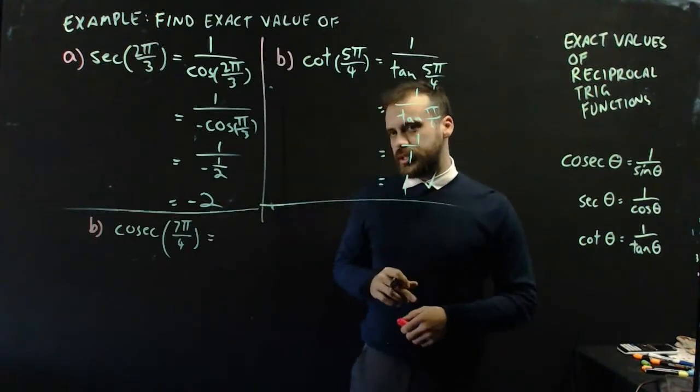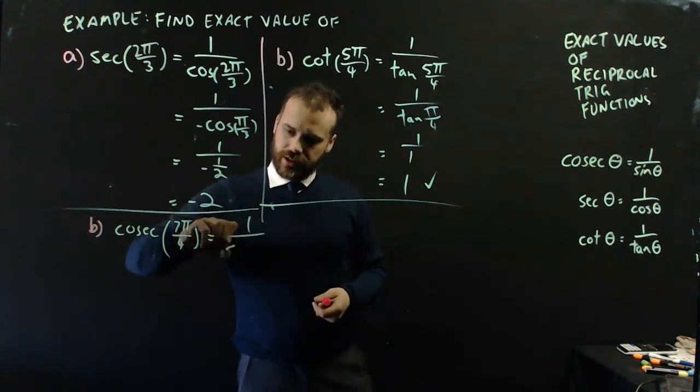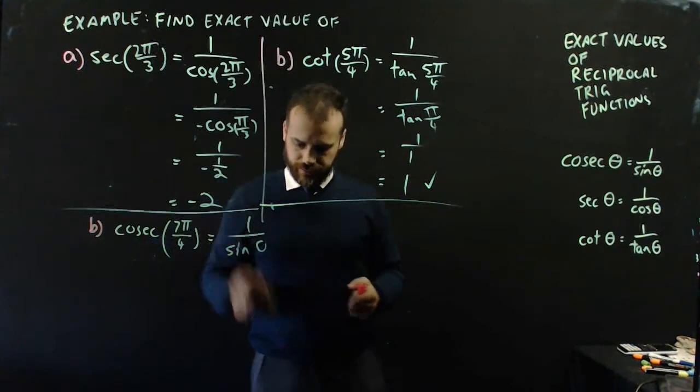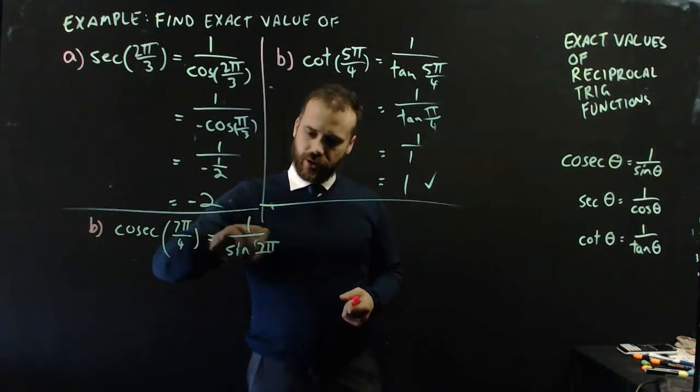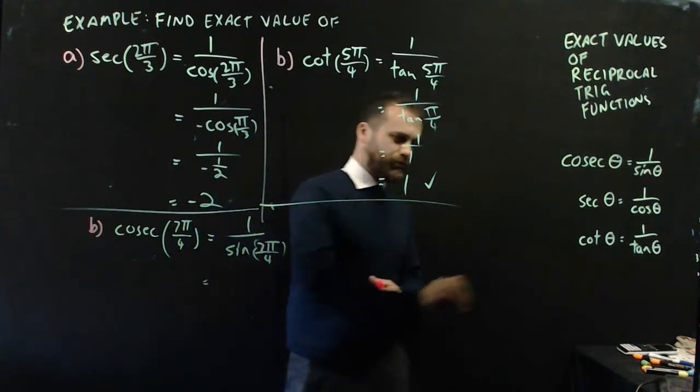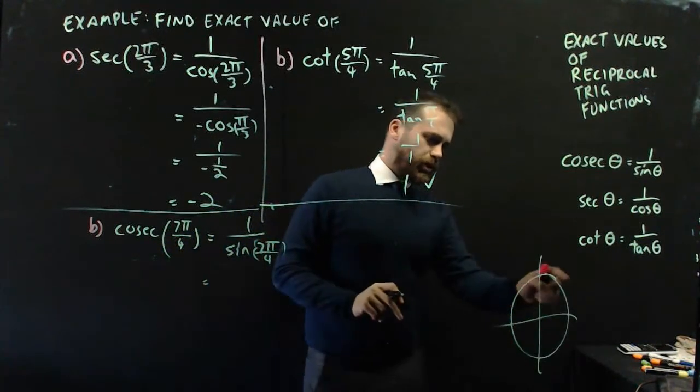So, let's knock over cosec 7π/4. Now, we know that cosec is the same as 1/sin θ, in this case, 7π/4. Now, 7π/4, what does that look like?